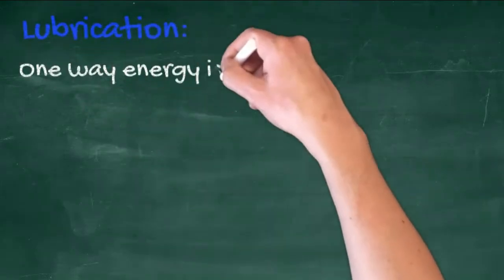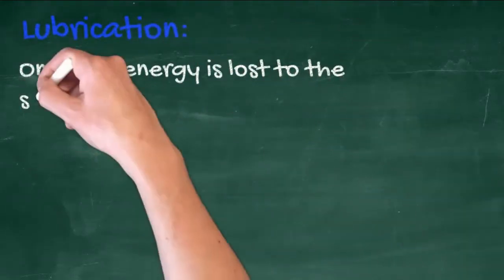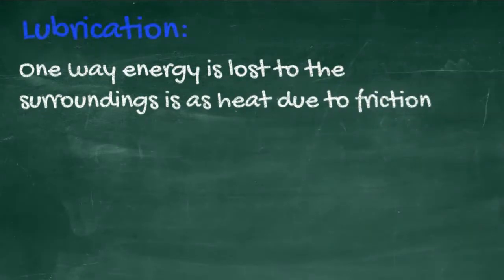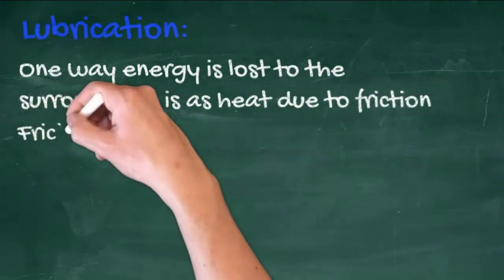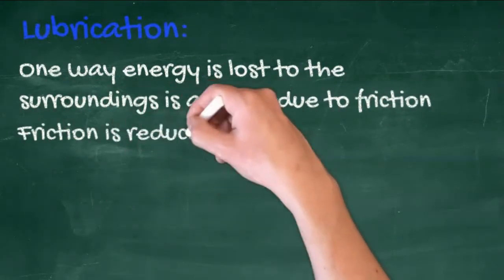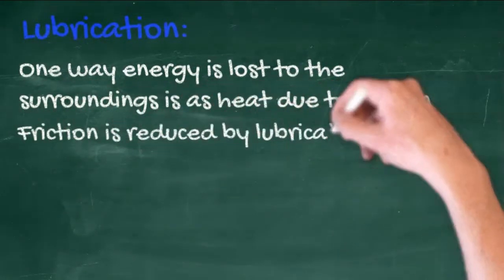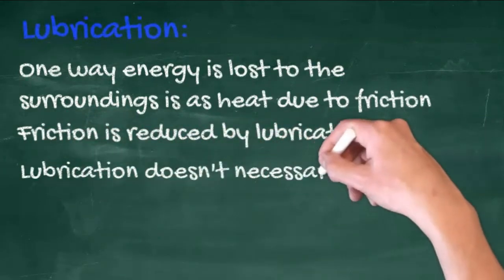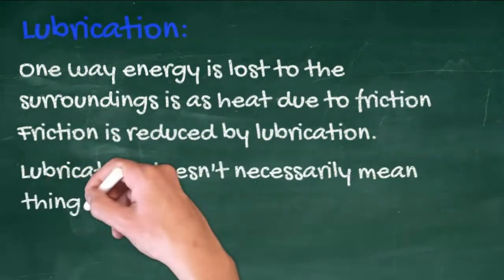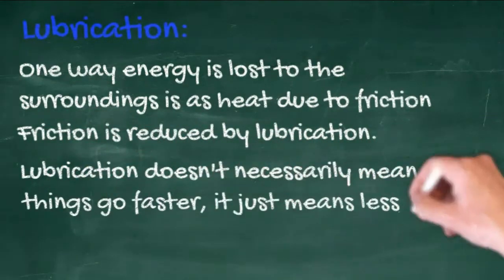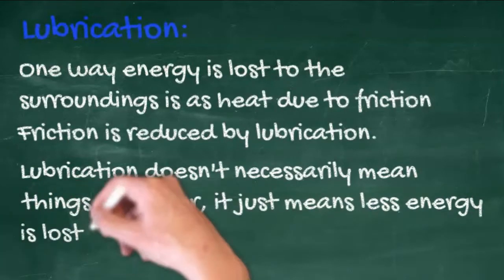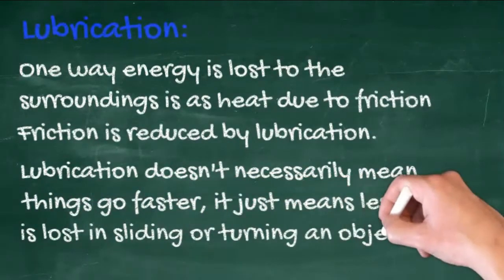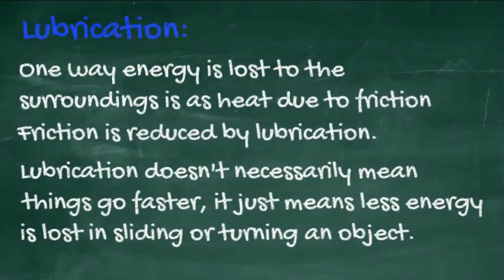One way energy is lost is to the surroundings as heat due to friction. Friction is reduced by lubrication. Lubrication doesn't necessarily mean things go faster — it just means less energy is wasted in sliding or turning an object.